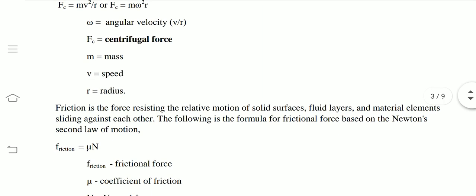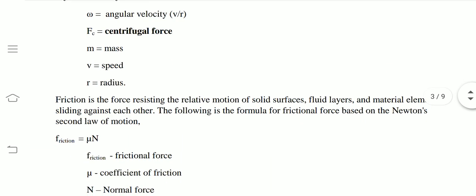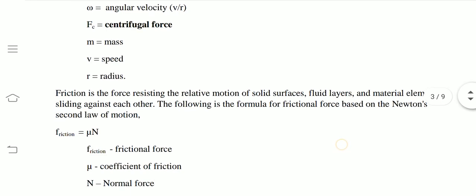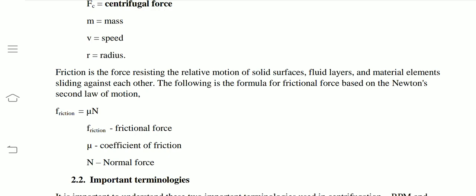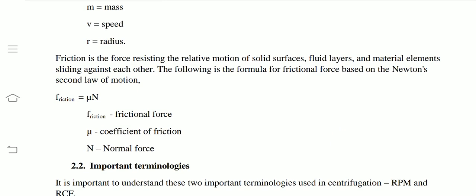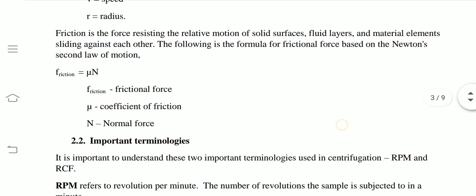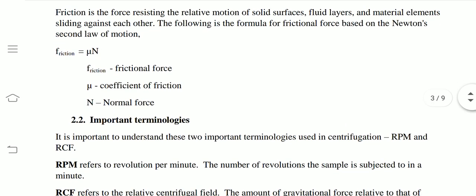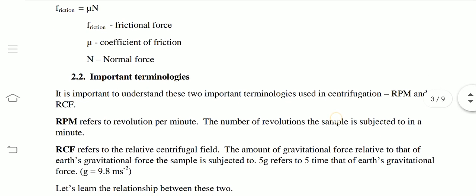Friction is the force resisting the relative motion of solid surfaces, fluid layers, and material elements sliding against each other. As centrifugal force increases, there will be friction between solid surfaces, fluid layers, and material elements. The formula for frictional force based on Newton's second law of motion is: friction equals mu times N, where mu is the coefficient of friction and N is the normal force.